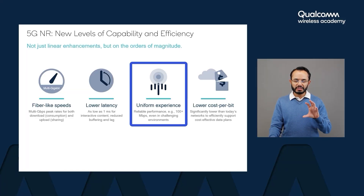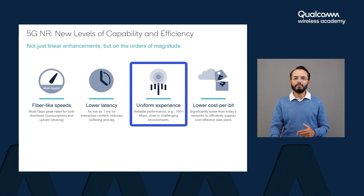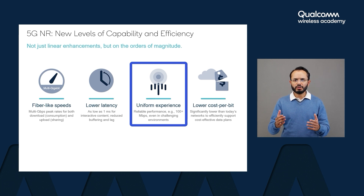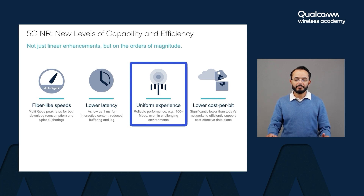It would not be very difficult to provide such improved performance in terms of speeds and latency in some very specific network conditions, but importantly, 5G has been designed to provide better performance in a more uniform manner regardless of where you are in the network. Even in certain challenging conditions, 5G has been designed to provide upwards of 100 Mbps of throughput, depending upon your exact network conditions.